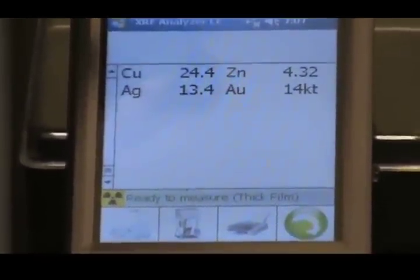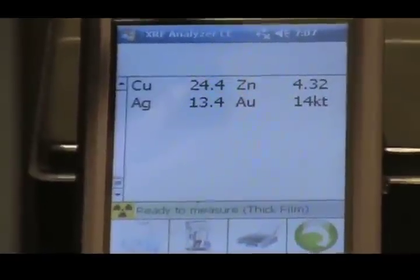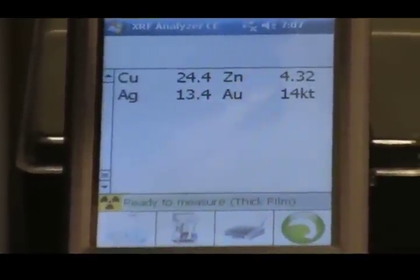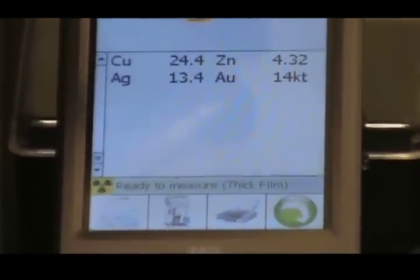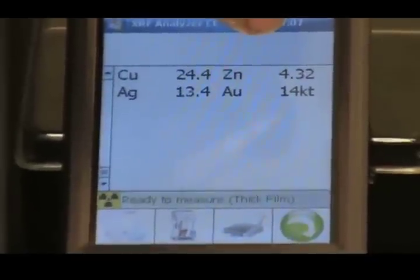We have copper at about 24 percent. We have zinc at about 4 percent. We have silver at about 11 percent and we have gold at 14 carat.